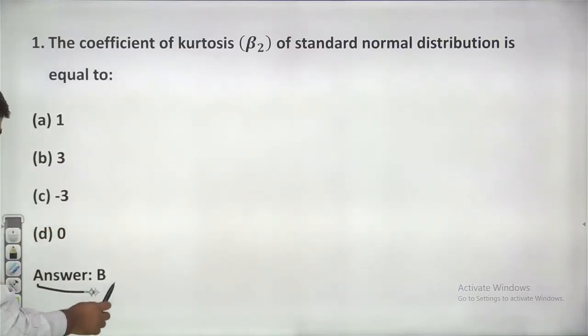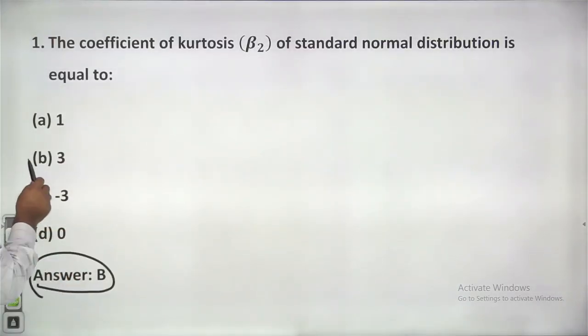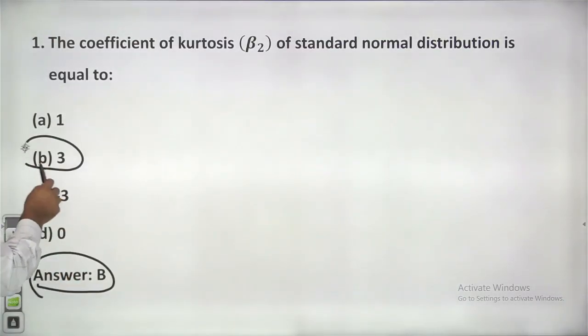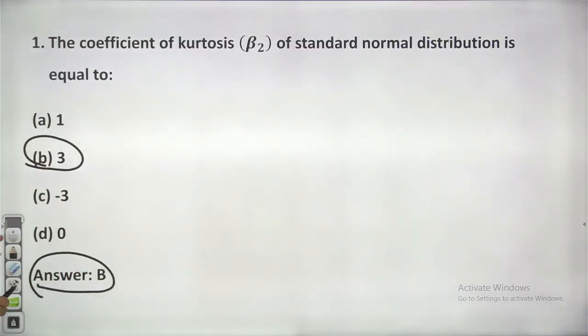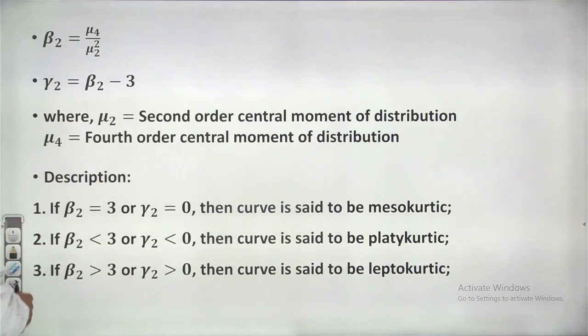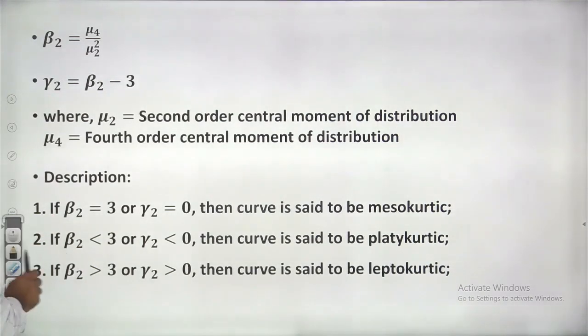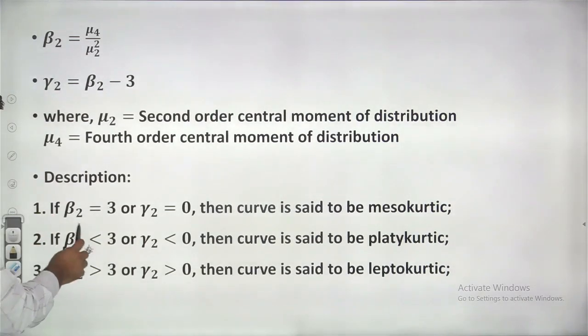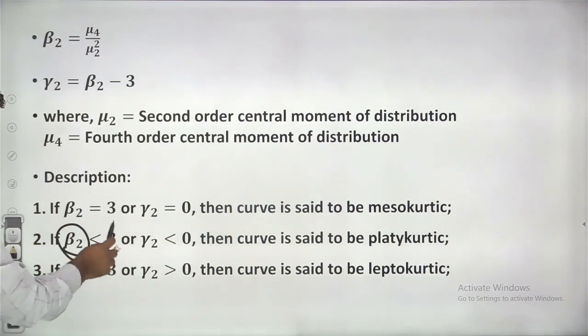For normal distribution, your beta 2 should be 3. Further, you can enhance your knowledge: when beta 2 is less than 3, the curve is platykurtic.